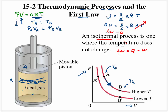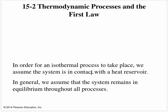From the first law, if the change in internal energy is zero, then the heat into the system must equal the work done. For an isothermal process — meaning constant temperature — we say the system is in contact with a heat reservoir that regulates the temperature, so the system doesn't fluctuate in temperature, even though in reality it might vary just a tiny bit.